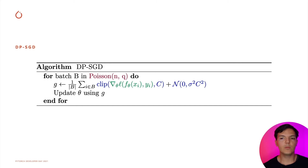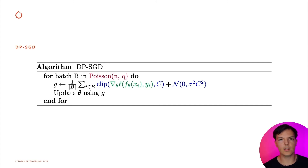Finally, we need to modify batch creation. Instead of randomly cycling through elements, at each step we flip a coin for each sample to decide if it goes into the batch or not. This is called a Poisson batch. Because of the post-processing property, we can not only do vanilla SGD but also fancier optimizers such as Adagrad, Adam, etc.